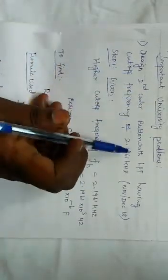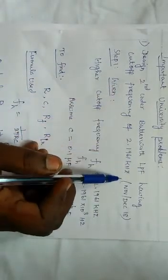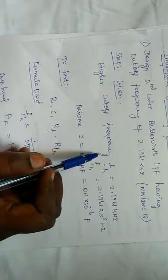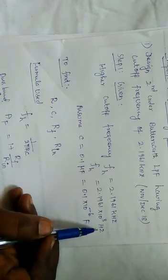In Unit 2, design a second order Butterworth low pass filter having cut off frequency of 2.1961 kHz — this is from December 2018. The given problem is a low pass Butterworth filter. We are considering the cut off frequency as the higher cut off frequency, that is FH equal to 2.1961 kHz, which is equal to 2.1961 × 10³ Hz.